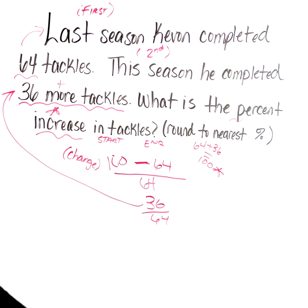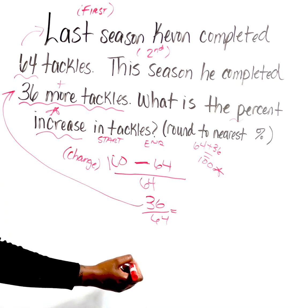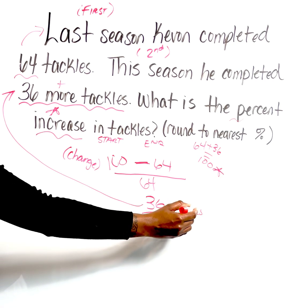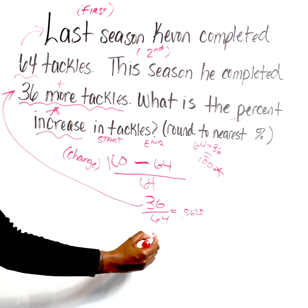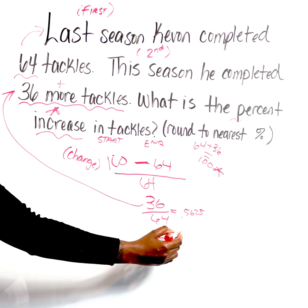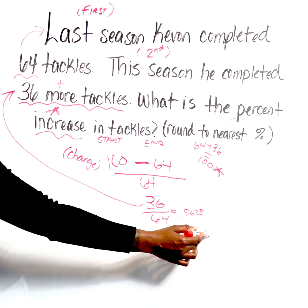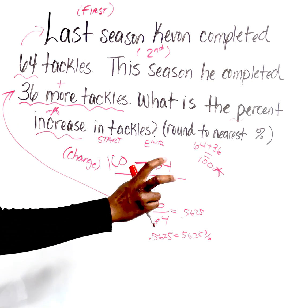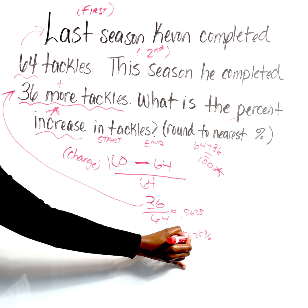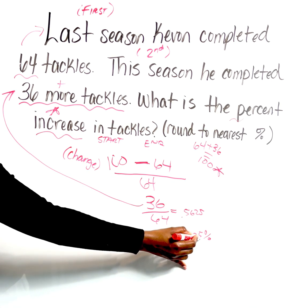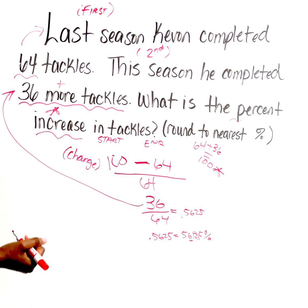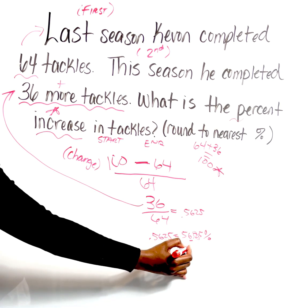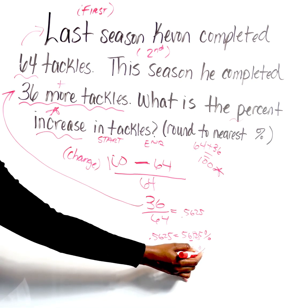From here we go from a fraction to a percentage — we convert to a decimal first. So 36 divided by 64 gives us 0.5625. We convert that to a percentage: 56.25%. For this question, round to the nearest percent, which is the same as rounding to the nearest whole number. Because six is in the ones place, we assess the two — so the six stays the same, giving us roughly 56%.